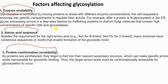The concentration and availability of glycosyltransferases and glycosidases can affect glycosylation. The amino acid sequence is also important — beyond requiring the correct amino acid (asparagine for N-linked, serine or threonine for O-linked), many enzymes have consensus sequences or motifs that enable formation of the glycosidic bond.